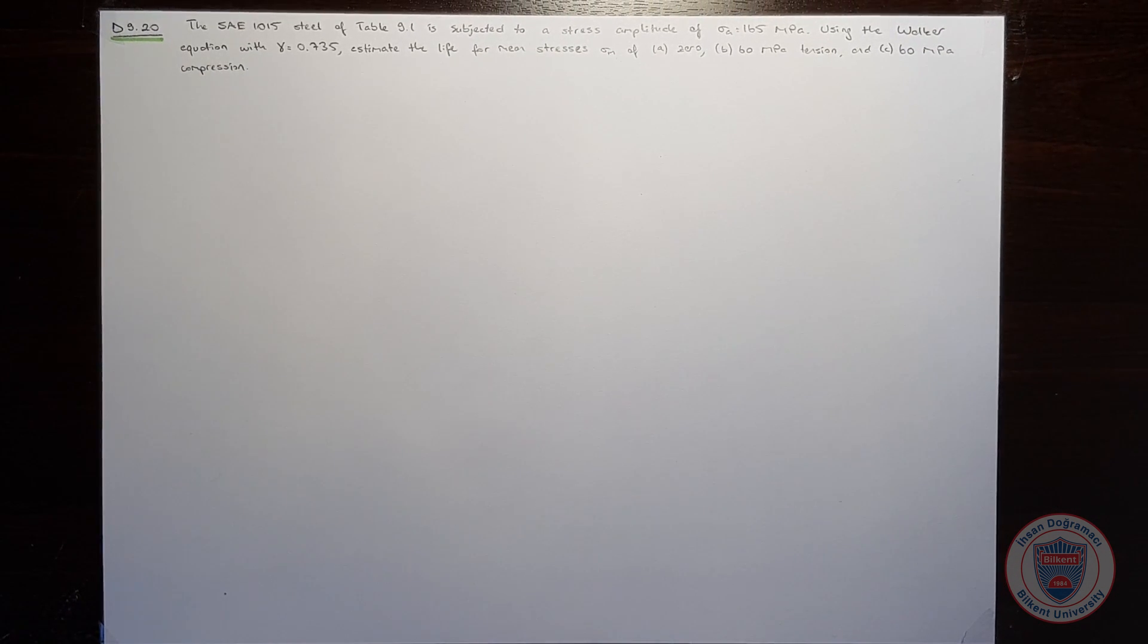In this problem, we have SAE 1015 steel subjected to a stress amplitude of 165 MPa. Our goal is to estimate life for mean stresses of 0, 60 MPa tension, and 60 MPa compression using the Volcker equation. We will use gamma equal to 0.735.